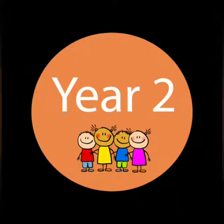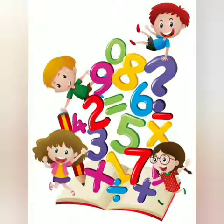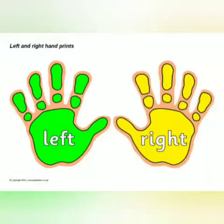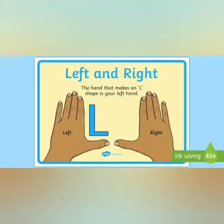Hello Year 2, welcome back to our maths lesson. Today we're going to be looking at position and direction. I hope you remember the vocabulary from last lesson. Let's start with left and right. Put your hands in front of you. Our left hand makes the shape of the letter L, so L for left, which leaves our other hand as our right hand.